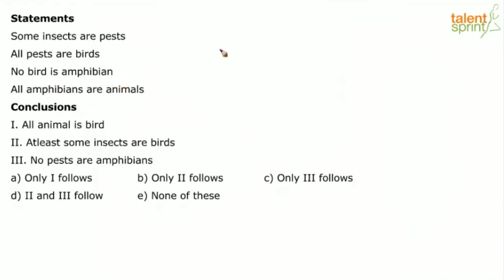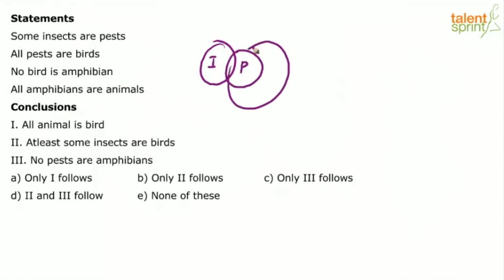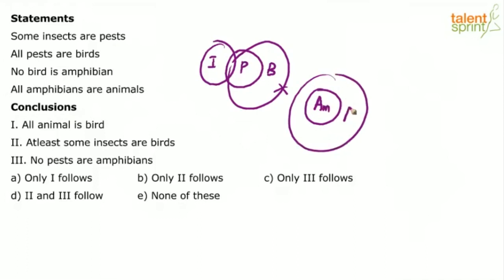Some insects are pests — so insects and pests overlap. All pests are birds. No bird is an amphibian. Let's say amphibian is 'A', and all amphibians are animals. Remember, no bird is an amphibian, so birds and amphibians cannot overlap. That's the basic diagram: some insects are pests, all pests are birds, no bird is an amphibian, so birds and amphibians cannot overlap, and all the amphibians are inside animals.